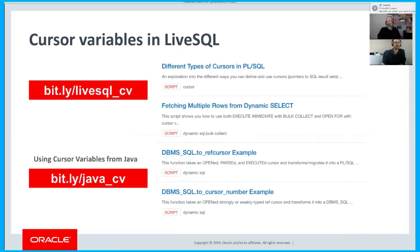Not a lot of slides, so I want to take a look over at LiveSQL and look at a few scripts I've created to work with cursor variables. You can use the bitly link — bitly LiveSQL underscore CV — and you'll see the same four scripts to explore yourself later. If you want to explore using cursor variables from Java, go to bitly slash Java underscore CV, and it'll point you to that documentation set.